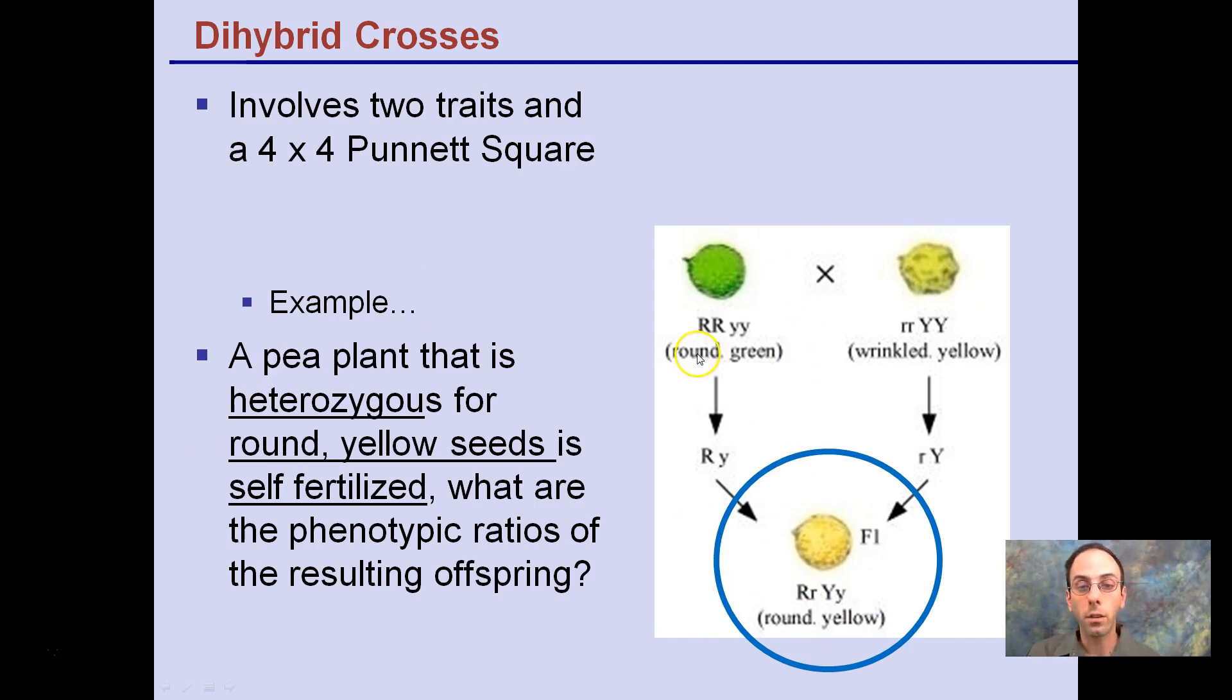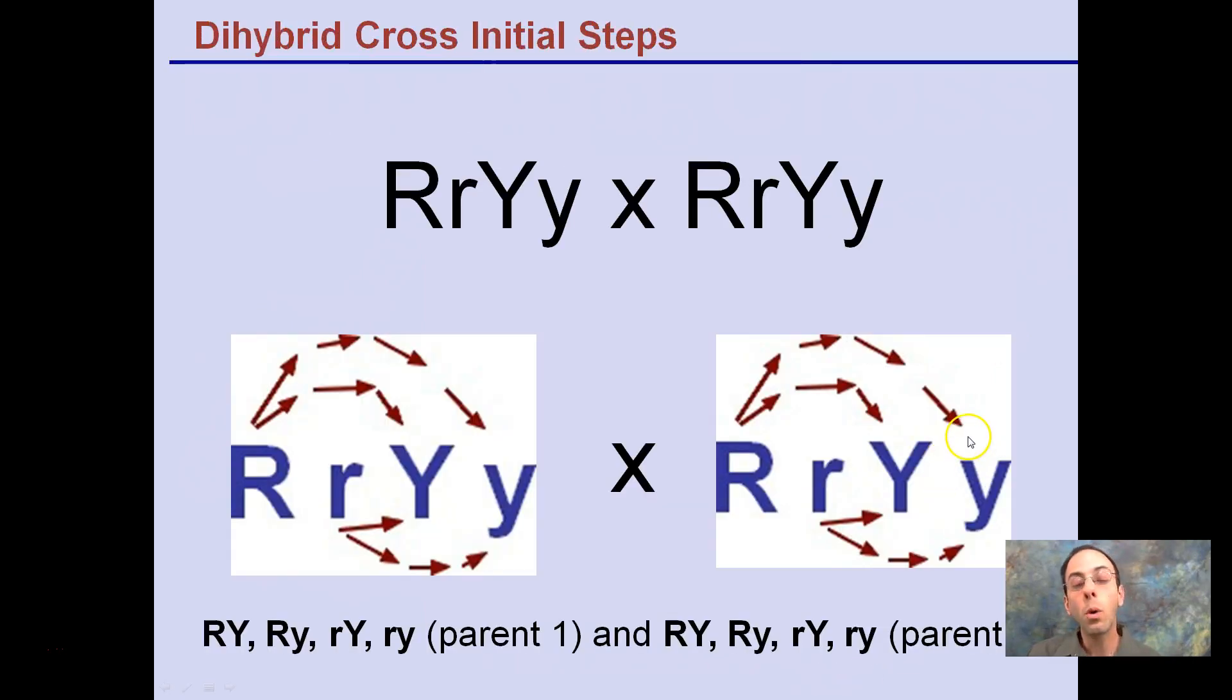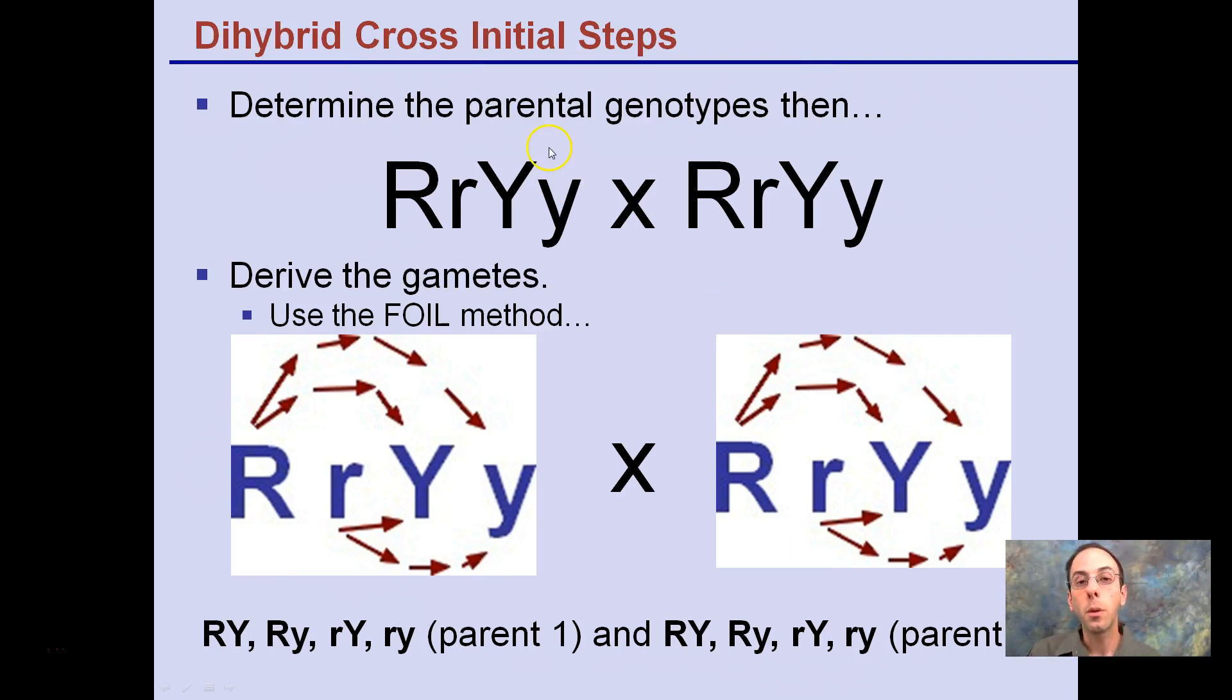What happens if we cross two of these individuals together? We know how we got that trait by showing this potential outcome for the cross. We're looking at this F1 generation. What we need to first do is determine the parental genotypes and then the offspring or the gametes that these can produce.